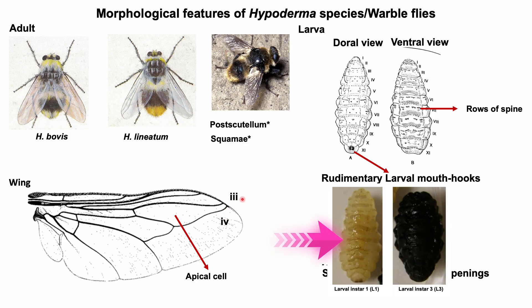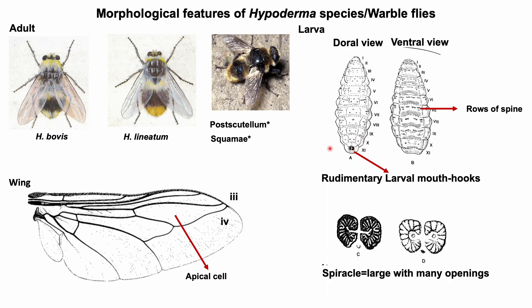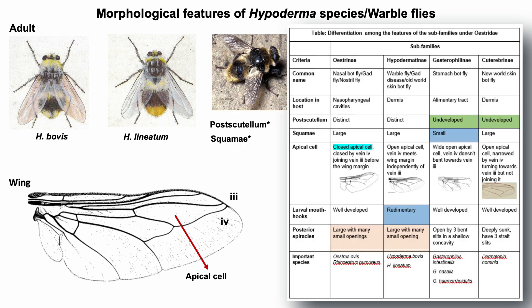The larvae are whitish and become dark brown in color over time, while pupae become black. The full-grown mature larva is somewhat barrel-shaped, tapering anteriorly, around 2.5 to 3 cm in length. The mouth hooks of larval stages are rudimentary, which differs from genera Oestrus, Gastrophilus, and Dermatobia. The posterior spiracles are large with many small openings, similar to nasal botfly but different from stomach botfly and New World skin botfly. Note these differential points among the subfamilies under the Oestridae family.